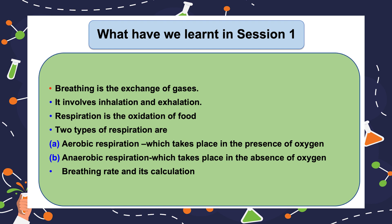Anaerobic respiration takes place in the absence of oxygen — it occurs in muscle cells in human beings. In muscle cells, anaerobic respiration results in production of carbon dioxide, water, and energy. In yeast, anaerobic respiration produces carbon dioxide, ethanol, and energy. Note that the energy produced in anaerobic respiration is lesser compared to aerobic respiration.